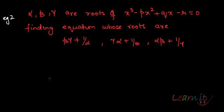Okay, so this time we are given an equation and the roots of it. The equation is x³ - px² + qx - r = 0 and the roots are α, β, γ. We need to form an equation whose roots are βγ + 1/α, γα + 1/β, and αβ + 1/γ. So how would we go about it?